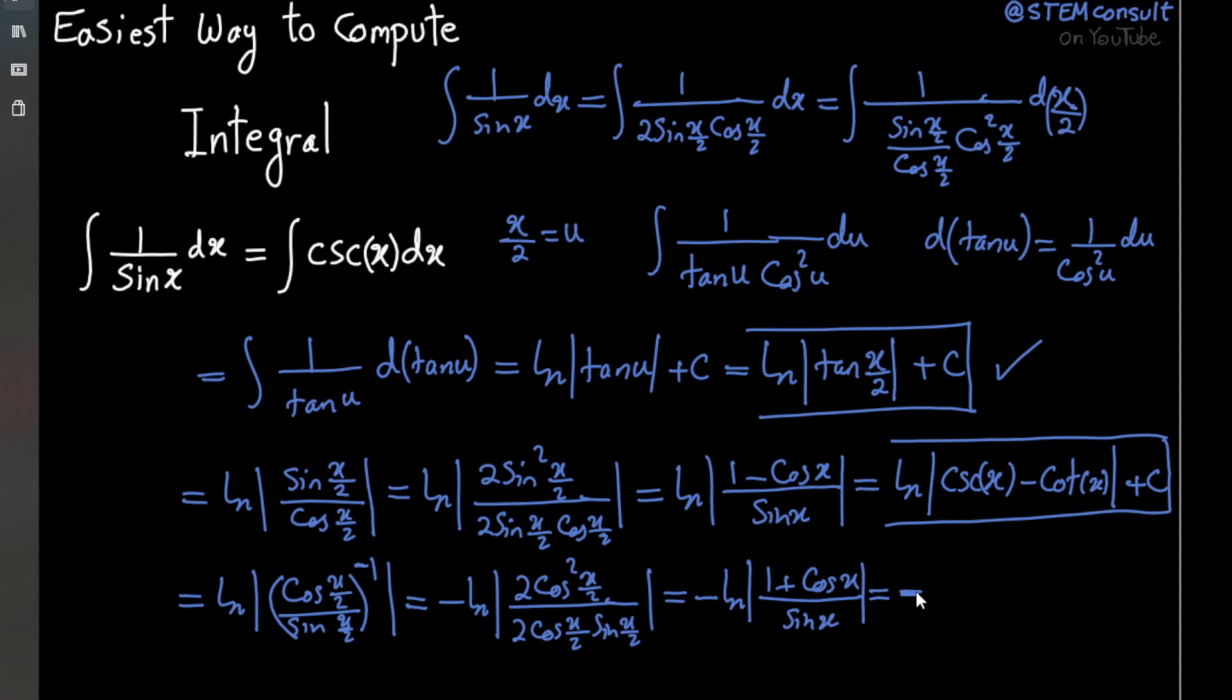Now, just a negative that we should not forget here. And of course ln. And we have 1 over sine, which is cosecant. And we have plus cosine over sine, which is cotangent.